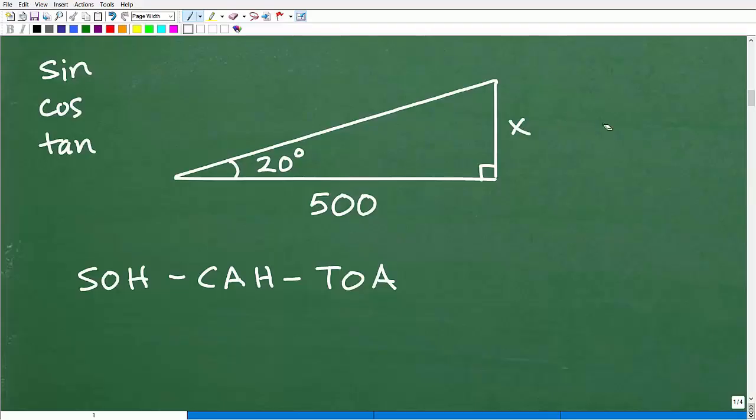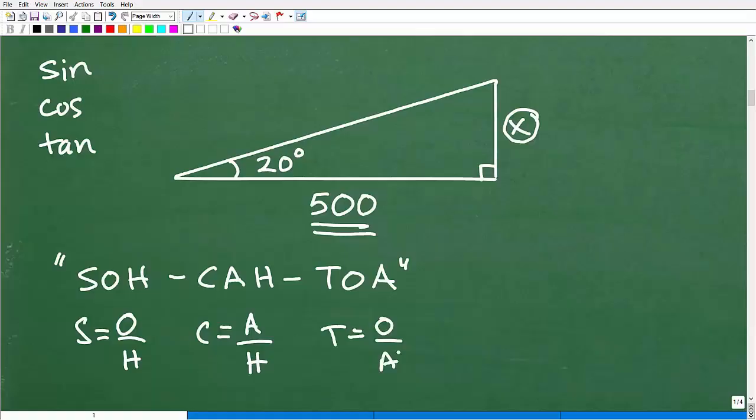Okay? So we need to pick the right one that we want to use here. Now, which one do I want to use? Well, I have this. I'm looking for this here. I'm interested in this side of the triangle. And I have this piece right here. And this is my angle. So this SOHCAHTOA, I don't know if you're familiar with this, but you should be SOHCAHTOA. This is sine. The sine of an angle is equal to its opposite over hypotenuse. The cosine is equal to the adjacent over the hypotenuse. And tangent is equal to opposite over adjacent.